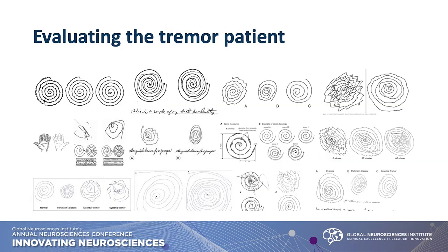When evaluating a tremor patient, have them do the thing that brings out the tremor — it's not helpful if they come in to talk about a tremor and you don't actually see it during the visit. Do the thing the patient knows has an impact on the tremor. Classically it's the spiral drawing for essential tremor, but if that patient says their tremor happens when pouring liquid from the coffee pot into the cup in the morning, mimic that movement — or eating soup and it goes everywhere, mimic that.